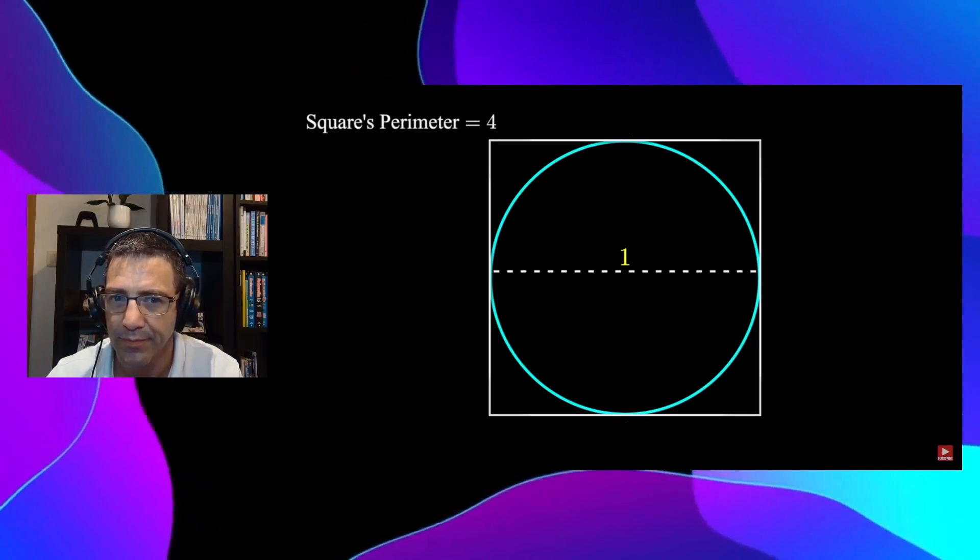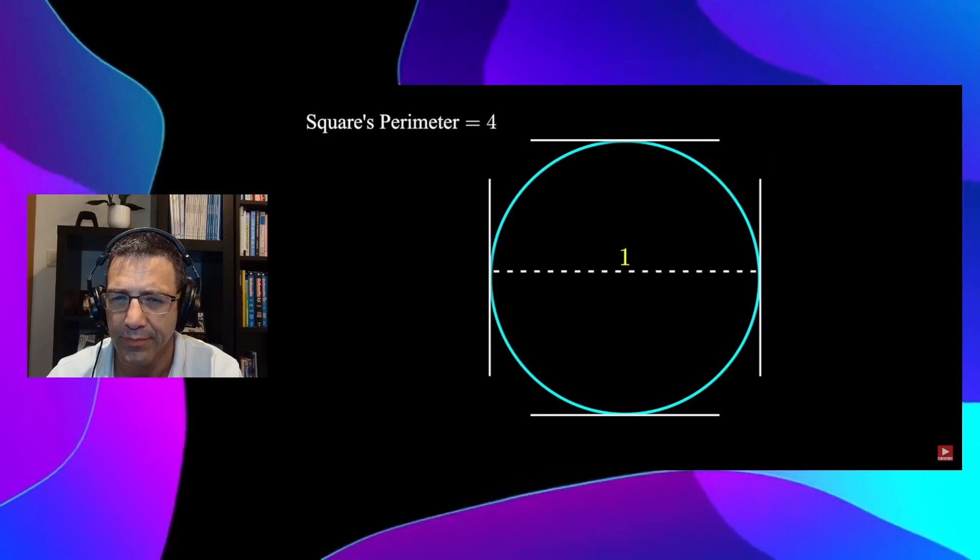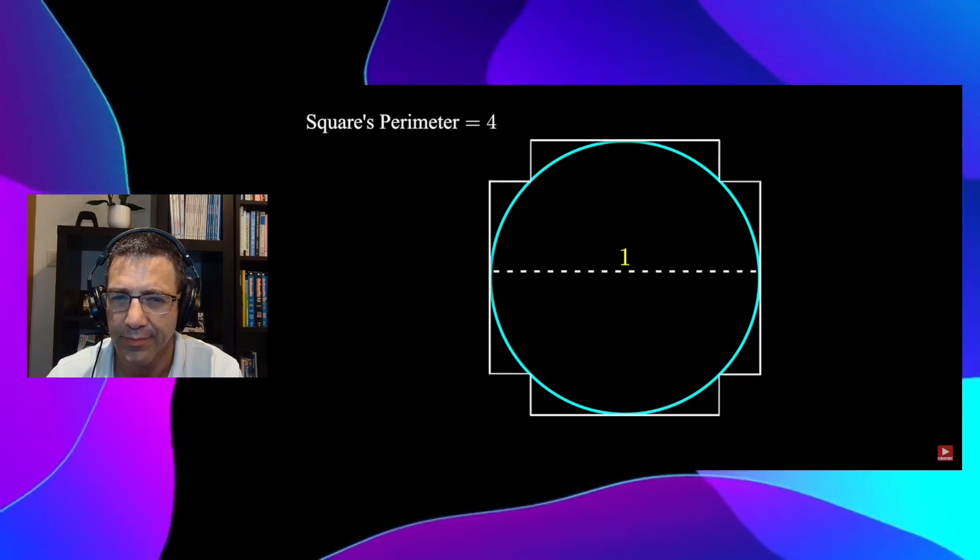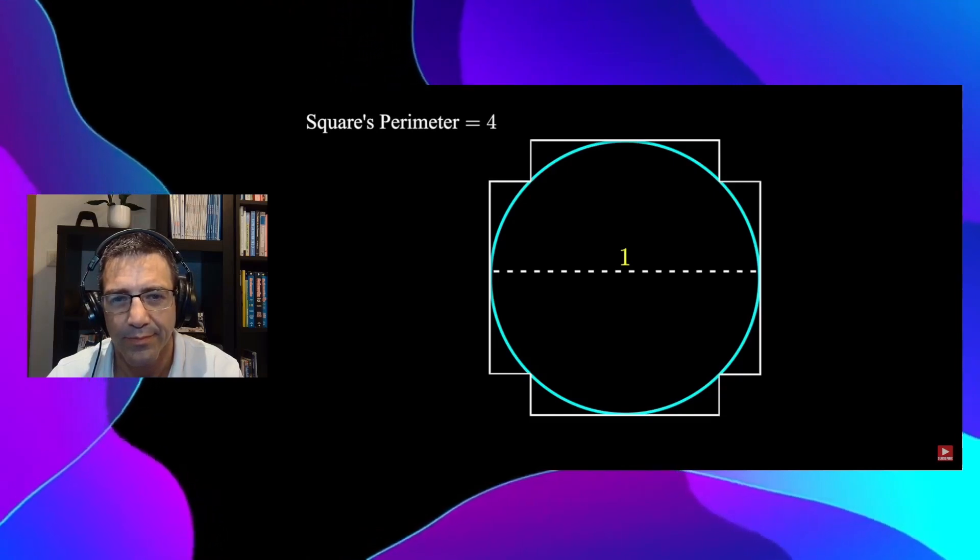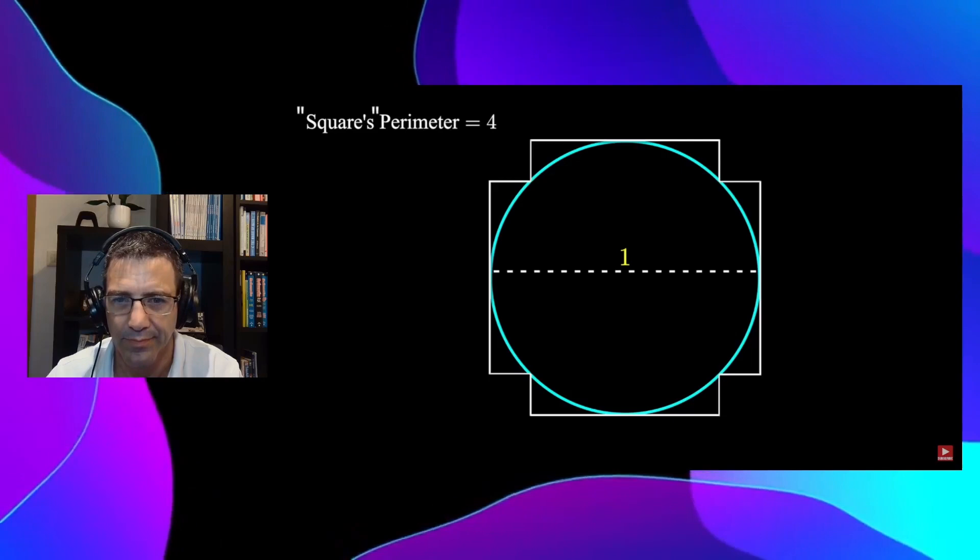Now remove the corners of the square and connect the shape to the circle in this way. Notice by symmetry the perimeter of this shape has not changed. It's still 4.